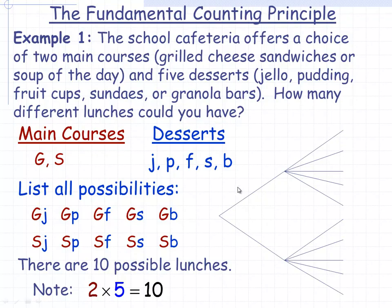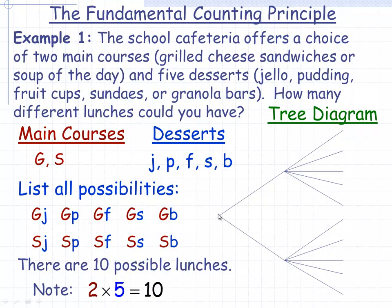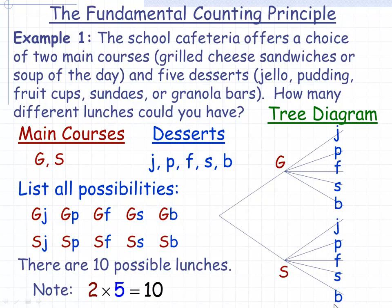This can also be solved using a tree diagram. Tree diagrams can either go across the page or start at some point and work down. This point here represents the fact that you have two choices to make — first for the main course. One branch represents choosing a grilled cheese, and the branch down here represents choosing soup of the day. If we've chosen grilled cheese, there are five branches because there are five possible selections for the dessert: Jell-O, pudding, fruit cup, sundae, or granola bar. Even if you've selected soup of the day, you still have the same choices for dessert.